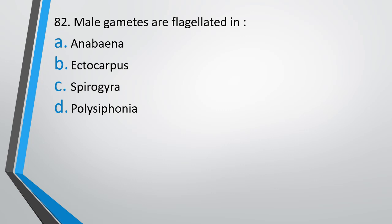Question number 82. Male gametes are flagellated in: Anabaena, ectocarpus, spirogyra, polysiphonia. Male gametes are flagellated in - correct answer is option B, ectocarpus.